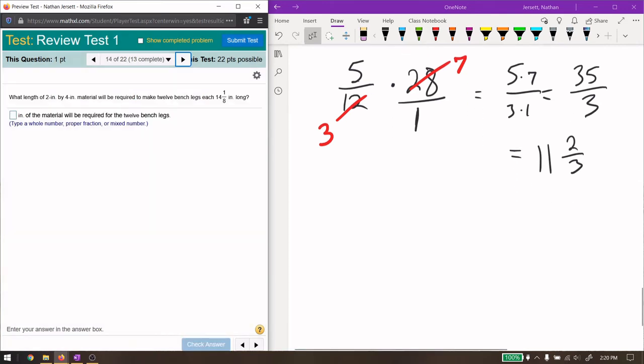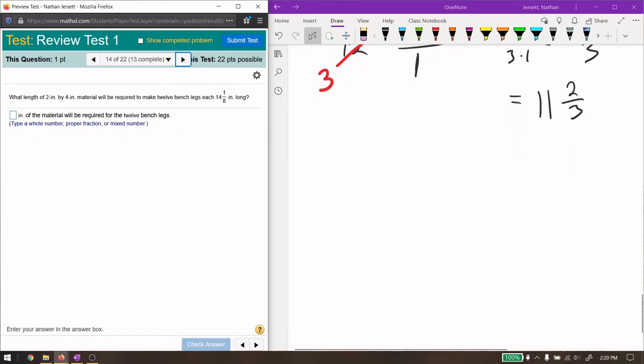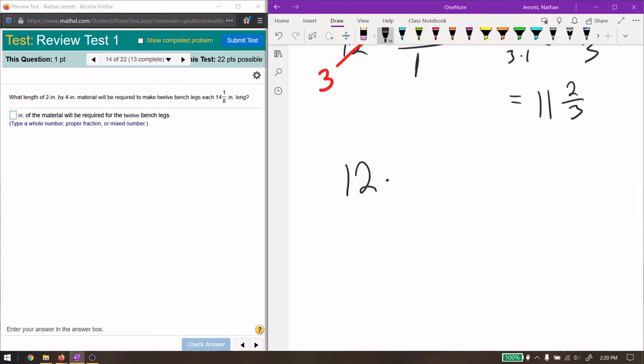What length of 2 by 4 is required to make 12 benches where each leg is 14 and 1 eighth inch long. We have 12 benches, and each one is 14 and 1 eighth inch long. So we just need to multiply these two things together. I'm going to write this over 1. I'm going to change this to an improper fraction.